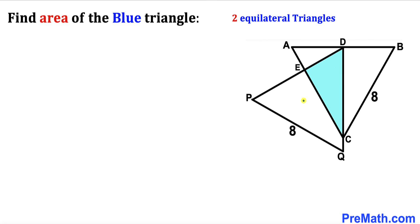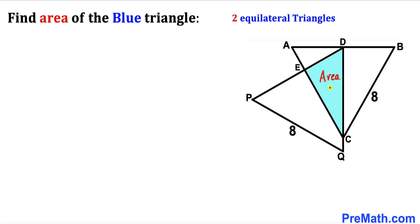In this video we have two equilateral triangles ABC and PQD, such that we get the blue triangle CDE. The side length of these equilateral triangles is 8 units across the board, and our task is to calculate the area of blue triangle CDE.